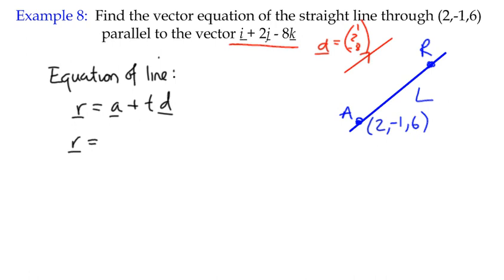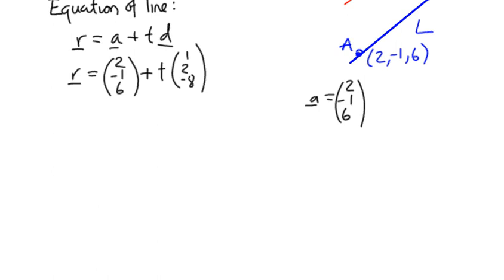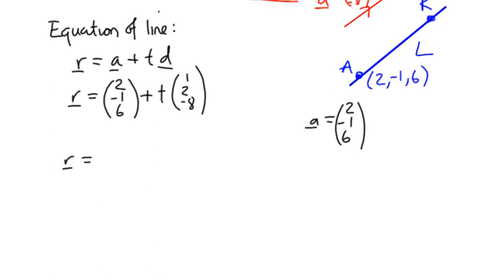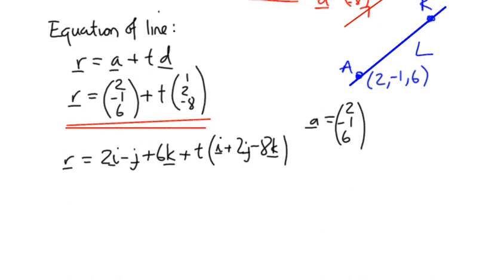We know that A is the position vector A. It's going to be the column matrix two, negative one, six. So two, negative one, six plus T times one, two, negative eight. That's basically it. That's as far as we can go with the equation of the line. We could express it in a horizontal form or unit vector form, two I minus J plus six K plus T times I plus two J minus eight K, which is a long winded and less helpful way to write it. But it's another way of writing it.